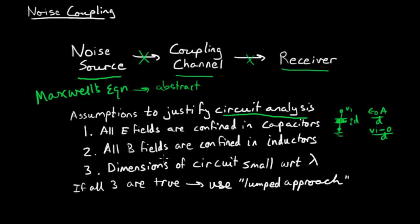The second assumption is that all magnetic fields are confined within inductors. So that means all the magnetic field considerations you need to consider, you can lump them together and model them as inductors. The inductor is going to have a magnetic field that loops around, it's a magnetic dipole.